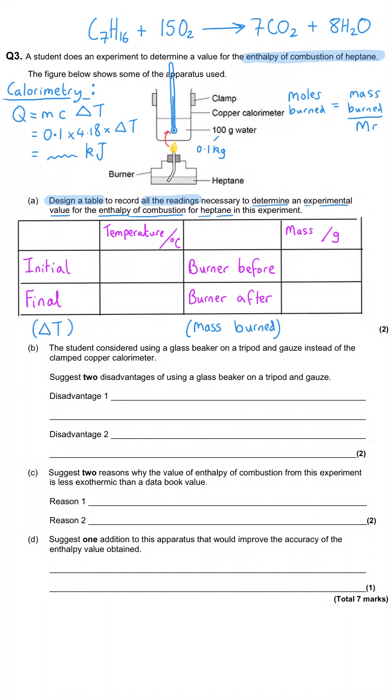We would work out the mass of heptane burned, we would divide it by its mr, that would give us the moles of heptane burned and then we would plug that back into the delta h is q divided by moles equation and that would allow us to calculate the enthalpy change in kilojoules per mole. And again remembering that this would be exothermic.